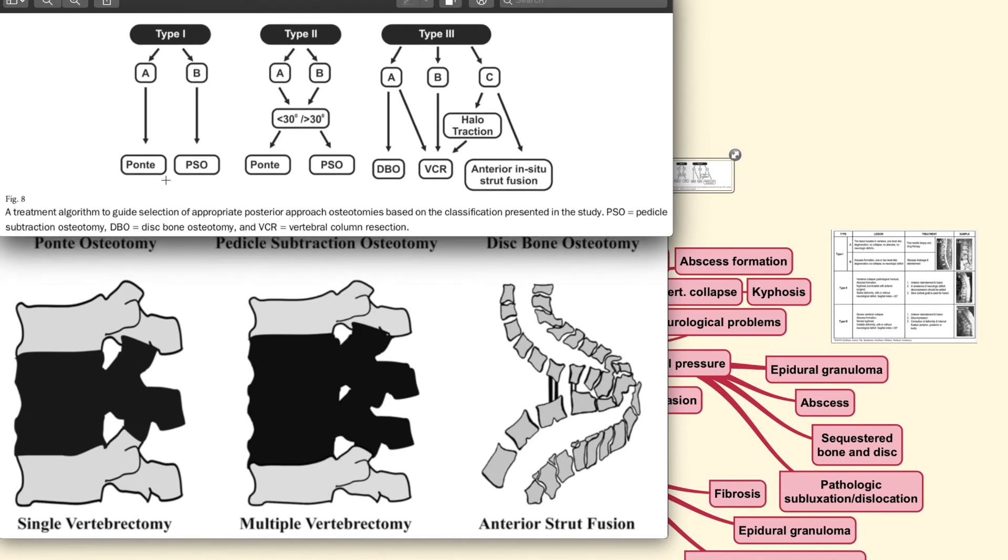Because in type 1A, you could do a Ponti osteotomy. For type 1B, you could choose a PSO which is the pedicle subtraction osteotomy. Or for the type 2A or 2B, you could use a Ponti or a pedicle subtraction osteotomy. And also for the type 3, there are all sorts of different osteotomy that could be done.